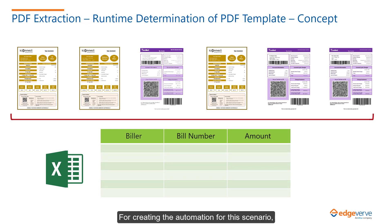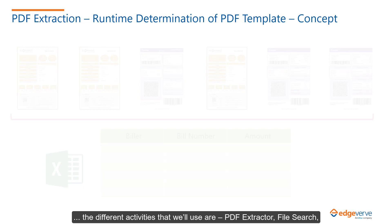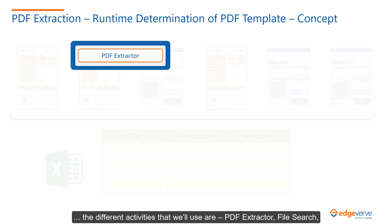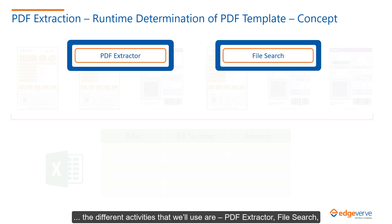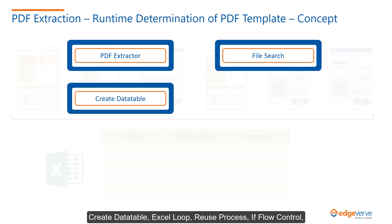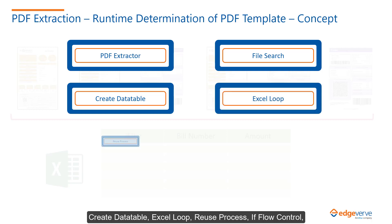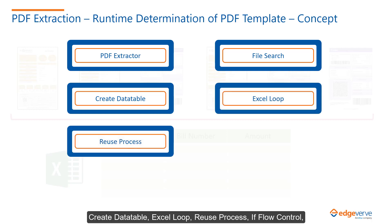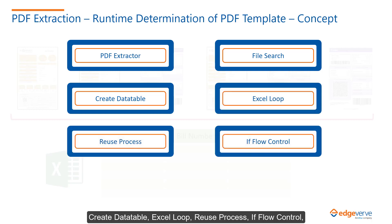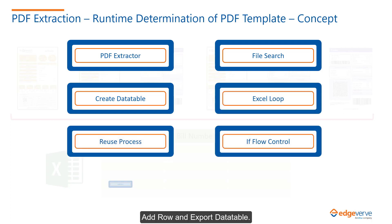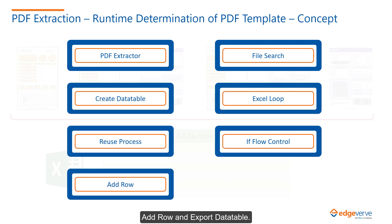For creating the automation for this scenario, the different activities that we will use are PDF extractor, file search, create data table, Excel loop, reuse process, if flow control, add row, and export data table.